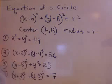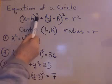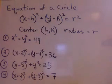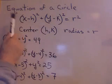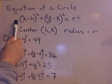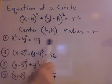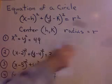You can see here the equation of a circle: x minus h squared plus y minus k squared equals r squared. When an equation of a circle is in this form, it's very nice because you can pick out the center, which is h, k, and the radius, which is r.